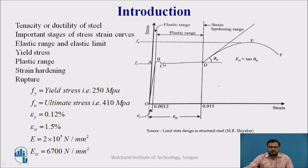Zone AB is the elastic range. Zone CD is the plastic range. Zone DE is the strain hardening range where stress increases, and point F is the fracture point.